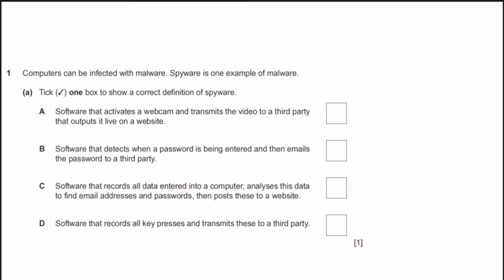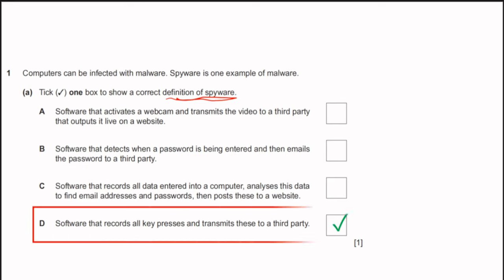Question number 1. Computers can be infected with malware; spyware is one example. We need to select the correct definition of spyware. Option A: software that activates a webcam and transmits the video to a third party — not correct. Option B: software that detects when a password is entered and emails it to third parties — also incorrect. Option C: software that records all data entered and analyzes it to find emails and passwords — also incorrect. Option D: software that records all key presses and transmits those to a third party. Option D is the correct answer.